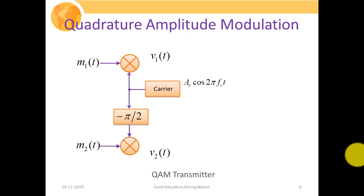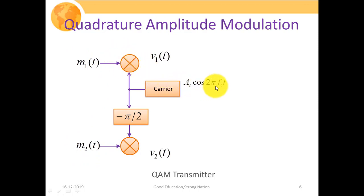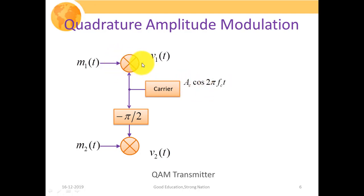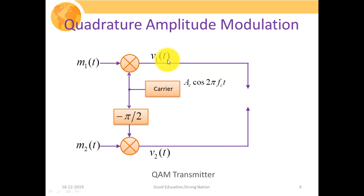Here we have the block diagram of the QAM transmitter. We have two product multipliers, and simultaneously we apply two different message signals: M1(t) and M2(t). The first product multiplier receives carrier signal Ac·cos(2πFct), while the second product modulator receives Ac·cos(2πFct − π/2), which is 90 degrees phase apart. The output of product multiplier 1 is V1(t) and the output of the second is V2(t). These two signals V1(t) and V2(t) are summed by a summer, and the output is the QAM signal denoted by S(t).